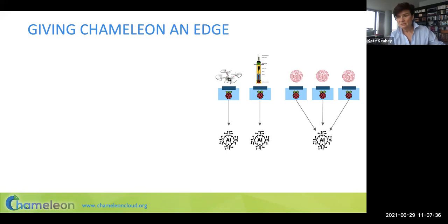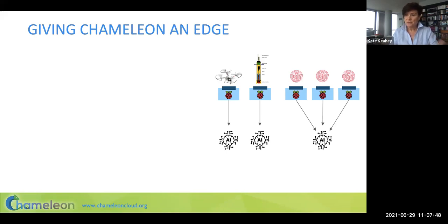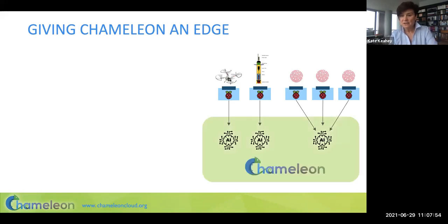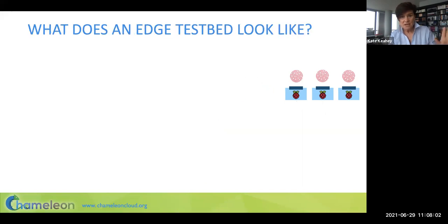Last month, we had an article from one of our users working on federated learning, but they can only emulate their experimental environment in Chameleon up to now. What we would like is for them to actually carry out their experiments on the edge. Up to now, we were providing AI capabilities in Chameleon in the cloud, but we were not providing those capabilities on the edge. So what does an edge testbed look like, and how do we make edge devices available to users?